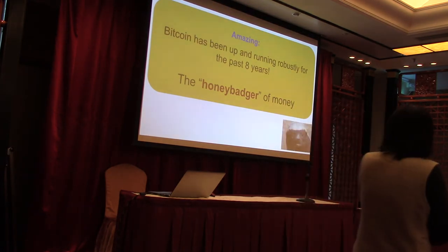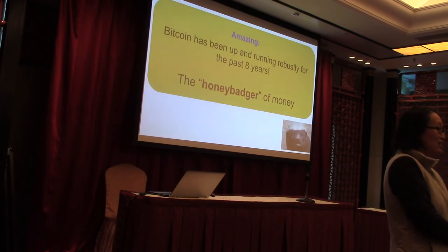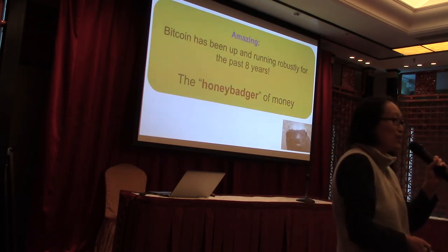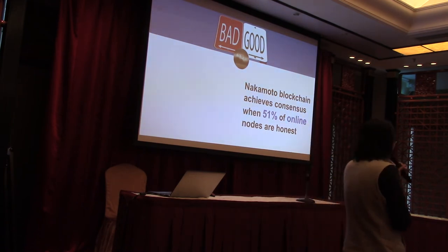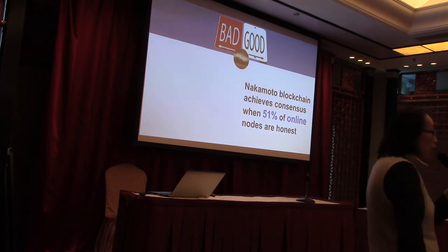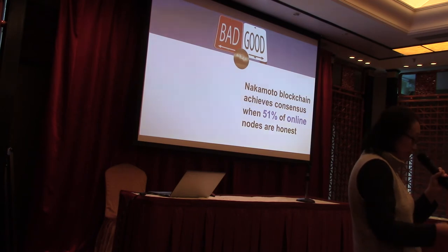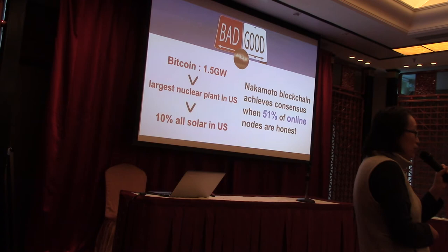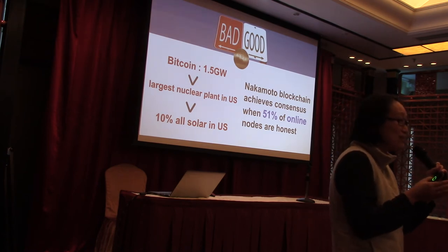Bitcoin has been up and running for more than nine years — maybe there were some minor attacks, but nothing really major. That's why Bitcoin is referred to as the honey badger of money. We can now mathematically prove that Bitcoin's blockchain protocol is capable of reaching consensus when 51% of the online nodes are honest. But on the other hand, this protocol is hugely wasteful — Bitcoin's electricity consumption is more than that of Ireland, and this is just for confirming roughly three transactions per second.